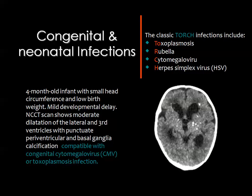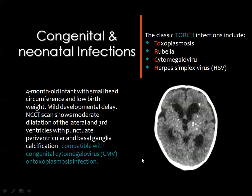We'll start with the congenital or neonatal intracranial infections, which are usually referred to by the abbreviation TORCH. TORCH stands for Toxoplasma, Rubella, Cytomegalovirus, and Herpes Simplex virus. All these infections may occur intrauterine or during birth. The appearances are almost similar on CT and MRI, and they commonly present with periventricular foci of calcification distributed throughout the cerebral hemispheres.